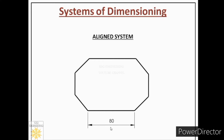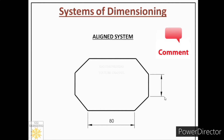Now we will learn how to place vertical dimensions under the aligned system. Suppose I want to place a dimension for a particular height. From the two points, I draw extension lines leaving a one-millimeter gap, then draw a dimension line with closed-field arrowheads on both sides. Under the aligned system, we follow the two rules: dimension above the line at the middle of the dimension line. For a vertical dimension line, the aligned system says dimensions should be readable from the right side of the page, so reading from the right, above the line will be this side.